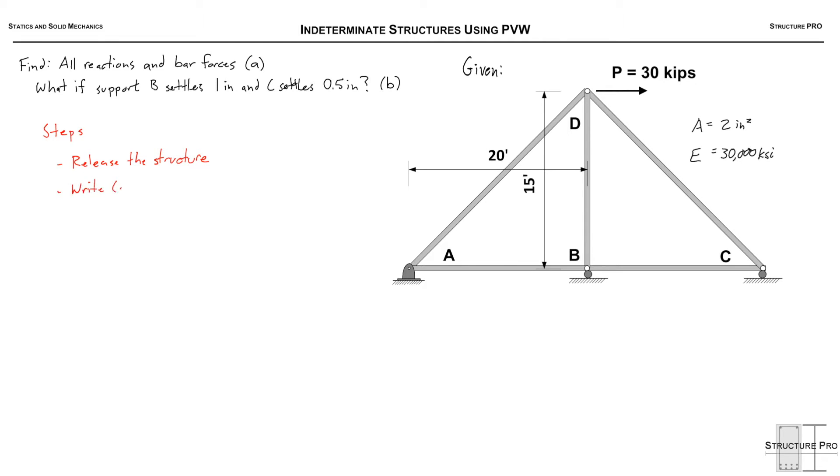So what are our steps? Well first we're going to release the structure. We're going to take out a redundant and we'll write out our compatibility equation, analyze the release structure with real loads, followed by analyzing the release structure with the redundant. That's a unit load acting where the redundant was that we released. And lastly we will solve the compatibility equation and that will tell us what reaction we have at our redundant, allowing us to solve the rest of the structure.